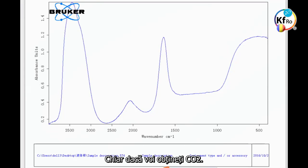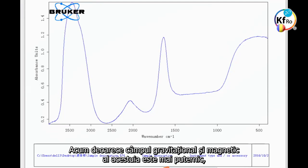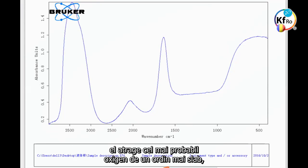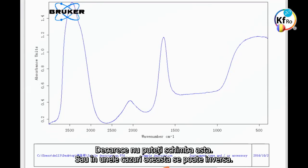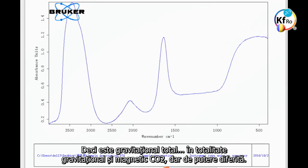Even though you still get CO2, now this carbon gravitational magnetic field, because it's stronger, it attracts to itself most probably lower order oxygens to balance itself out, to be able to understand the environment of the salt, because you cannot change that. Or in some cases it might be reverse. So it is gravitational total, in totality, gravitational magnetic field of CO2 but of different strength.